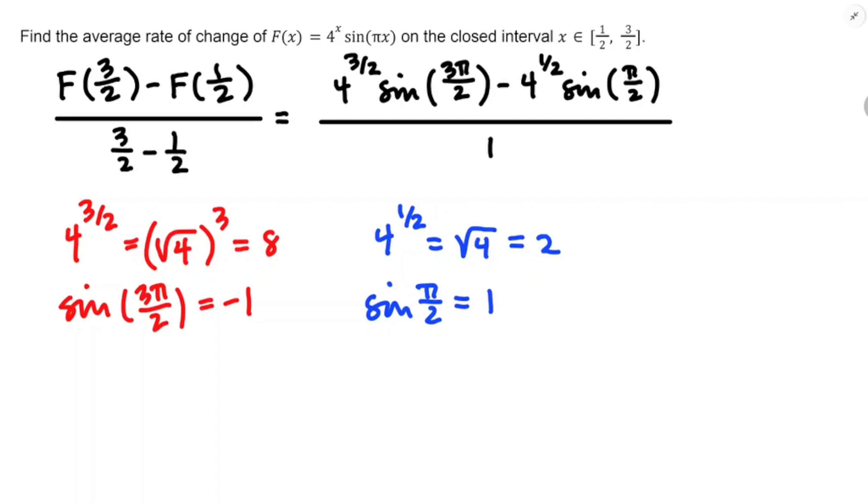Now, I'm going to kind of rewrite this fraction, filling in all of the pieces I just figured out. Four to the three halves, that's eight. Sine of three pi over two, negative one. Four to the one half is two, and sine of pi over two is one. We're still dividing by one, and all of a sudden it's like, oh, I can do this arithmetic. Negative eight minus two more, that's going to be negative ten.